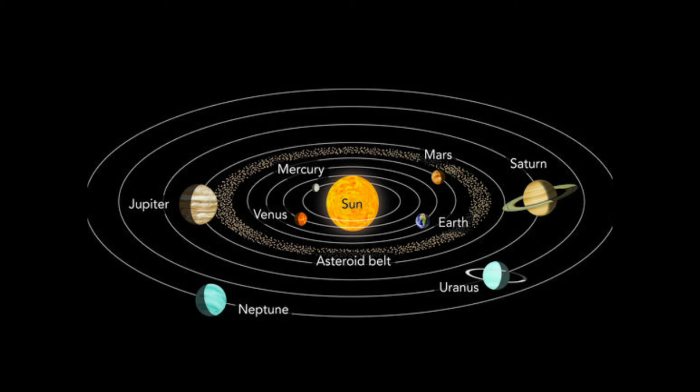Every planet in the solar system revolves around the sun. In this figure, we can observe that the sun is present in the center, and the various planets revolve around it — Mercury, Venus, Earth, Mars, Saturn, Uranus, Jupiter and Neptune.